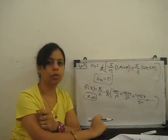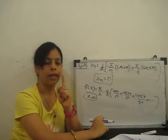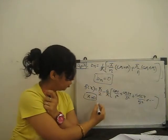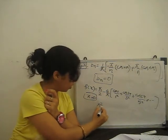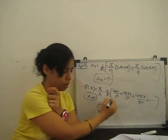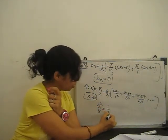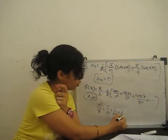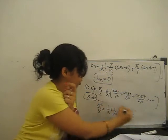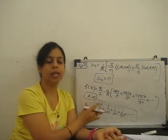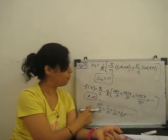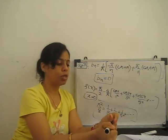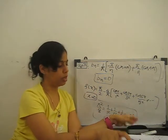If you substitute x = 0 into this series, it reduces to a useful result: π²/8 = 1/1² + 1/3² + 1/5² + ... Sometimes they ask for the value of that series, sometimes they ask only up to the Fourier series itself. This completes the Fourier series for the discontinuous function.